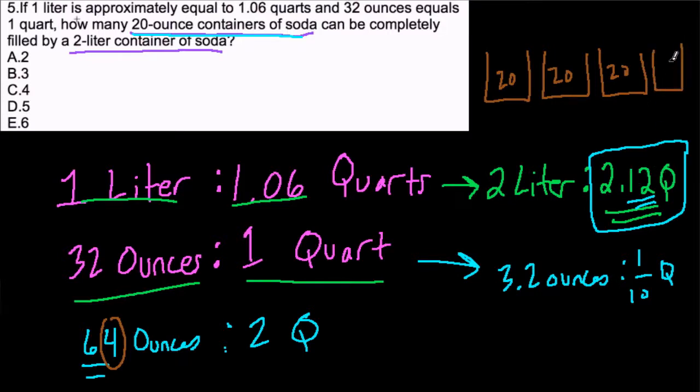But ask yourself: will those four ounces and about another 3.2 ounces—maybe another four ounces—fill up an entire bottle? No way. Four ounces and about another four is only about eight ounces. It will not fill the entire container up to the max. So that means only three containers will be filled, and our choice is B.